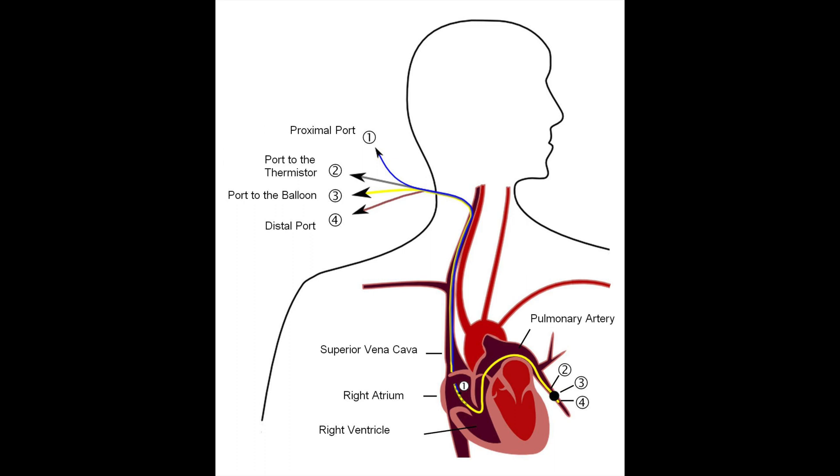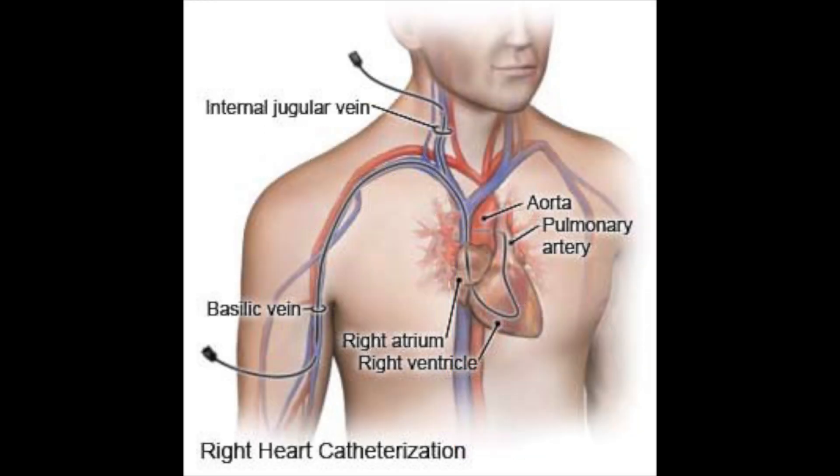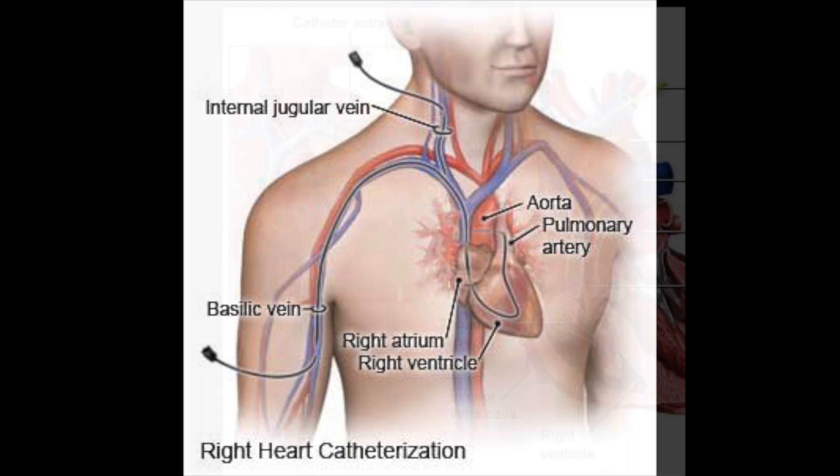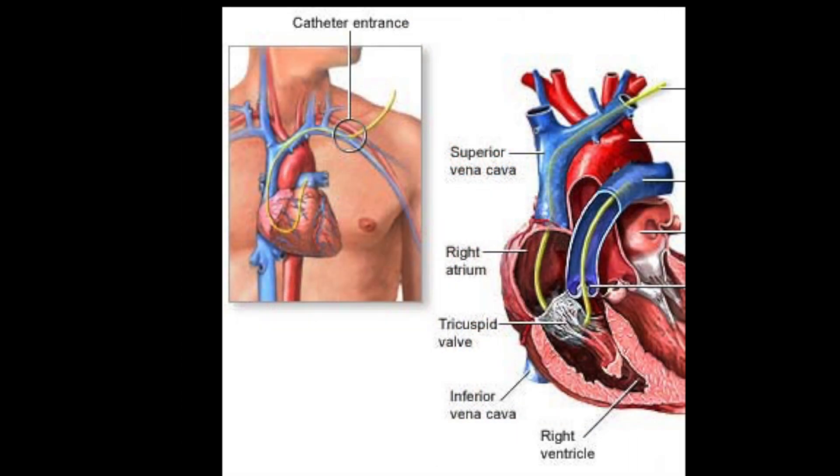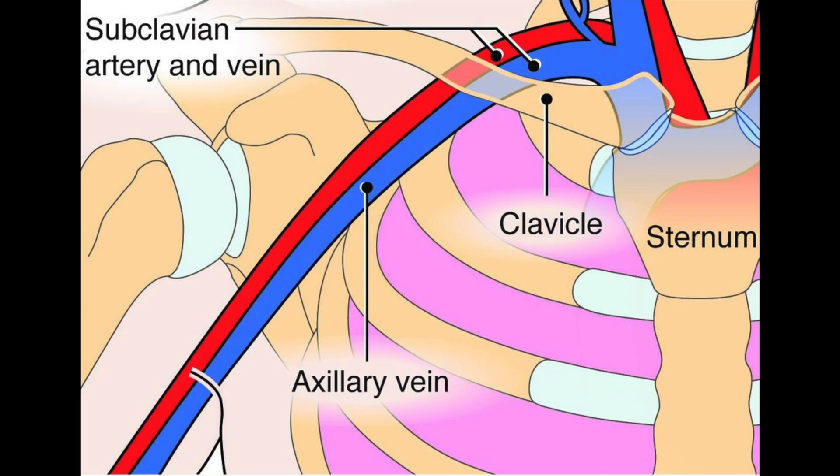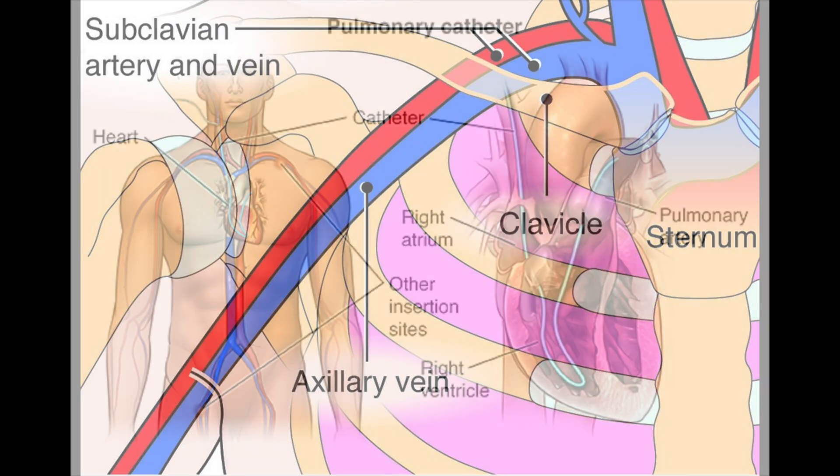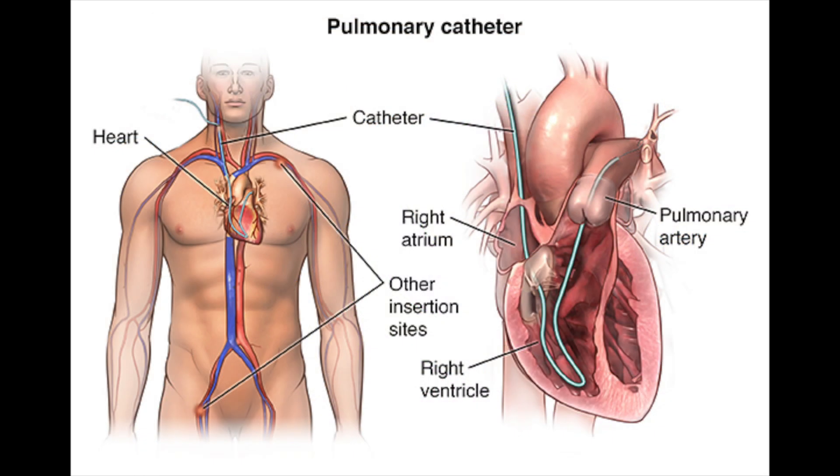The right internal jugular vein is located in the neck and is the shortest, most direct path to the heart. The left subclavian vein is located under the clavicle or collar bone. It's a large vein on the left side of the upper chest area. The femoral veins are located in the groins.